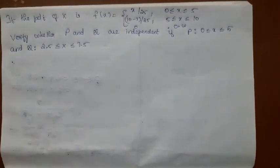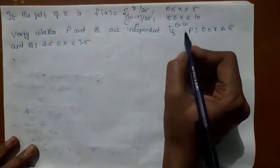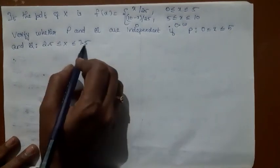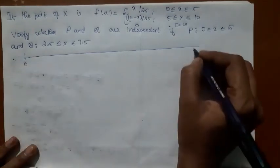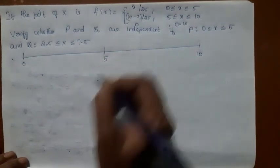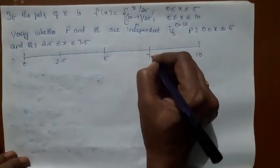Consider this problem in which a PDF is given. Using this probability density function, you are supposed to verify whether P and Q are independent. The event P is that X lies between 0 and 5, and the event Q is that X lies between 2.5 and 7.5. The least value of X is 0 and the highest value is 10, with 5 in the middle. The value 2.5 is here and 7.5 is here.